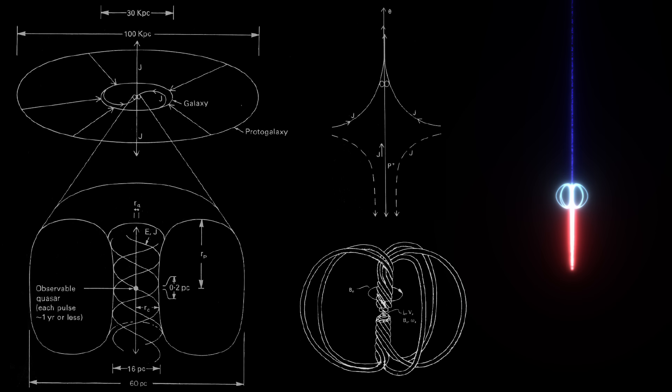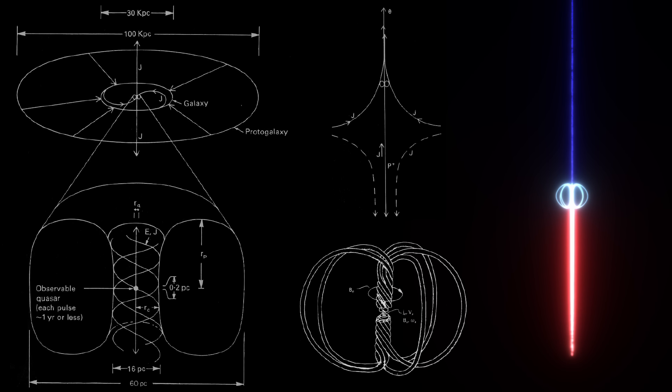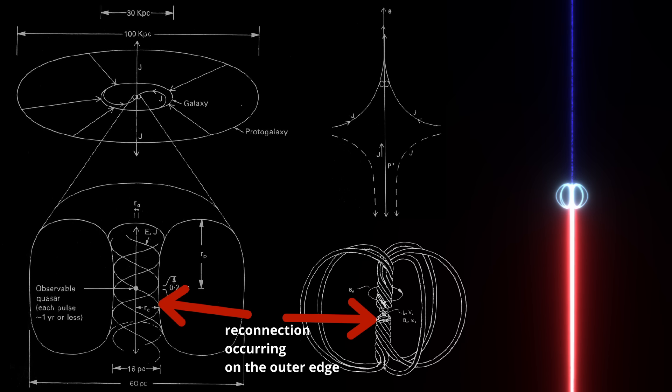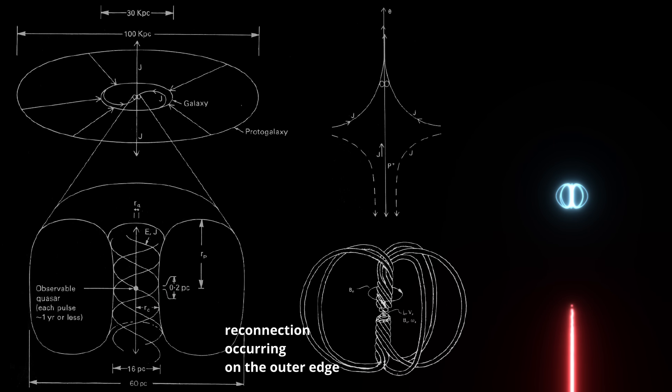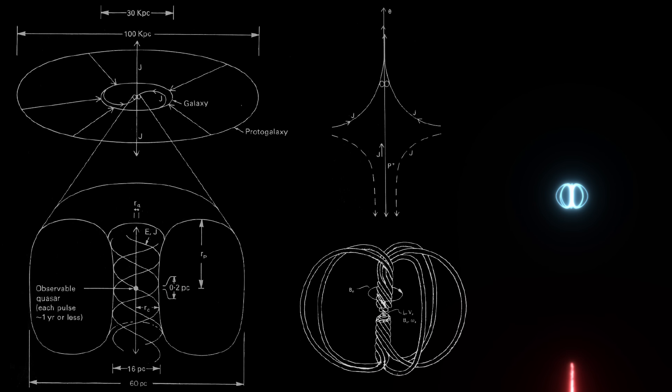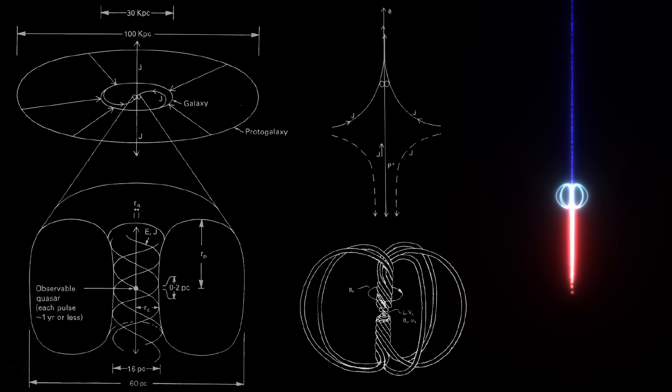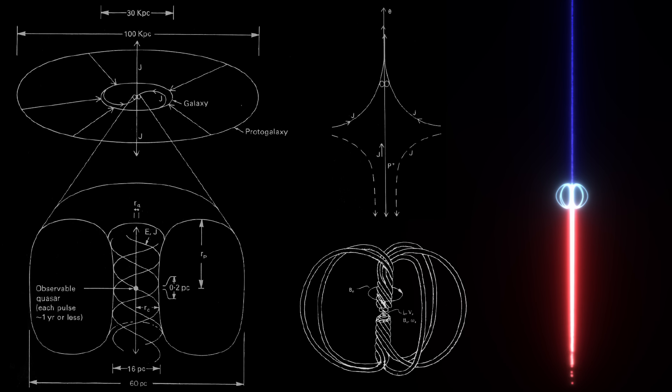Instead, it suggests that the flare could result from a large-scale magnetic reconnection event occurring further from the central region. This interpretation aligns with the observed spectral and polarization changes as well as the intense optical emissions through the dynamics of plasmoid formation and evolution.